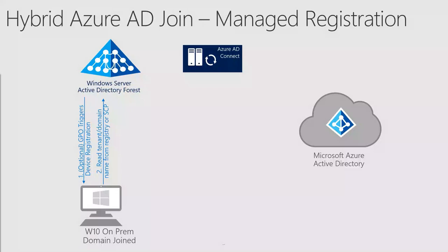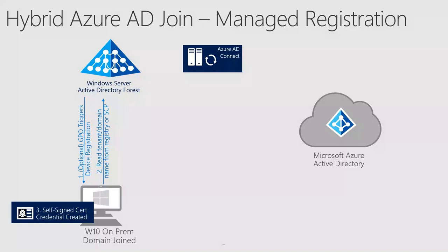As a reminder, the service connection point contains both the tenant ID and the domain name that will be used for home realm discovery in later steps. After reading the domain name, the workstation discovers whether or not the domain from the previous step is managed by retrieving information from Azure Active Directory. At this time, the workstation will establish a credential by creating a self-signed certificate.